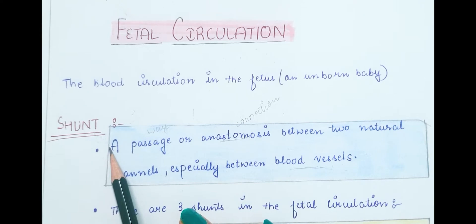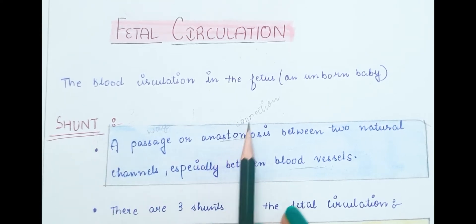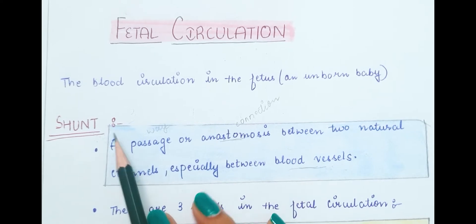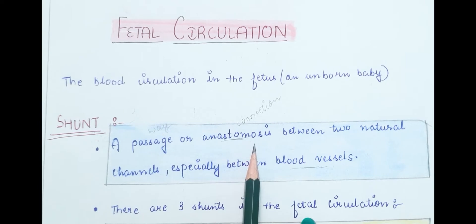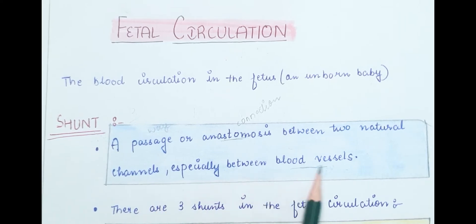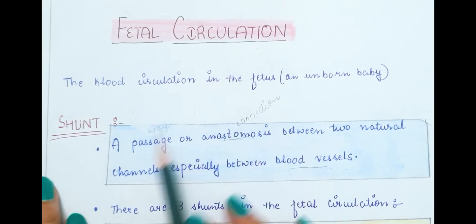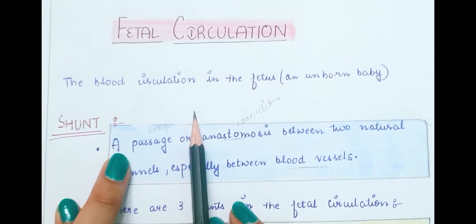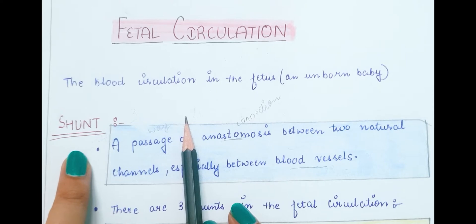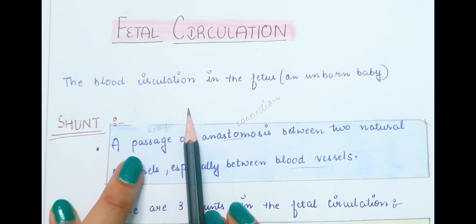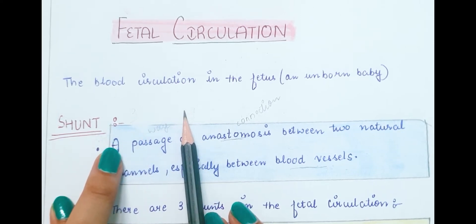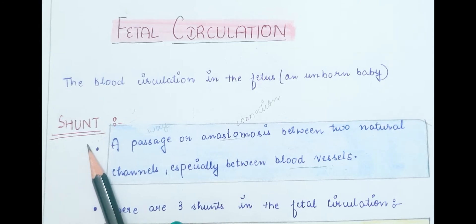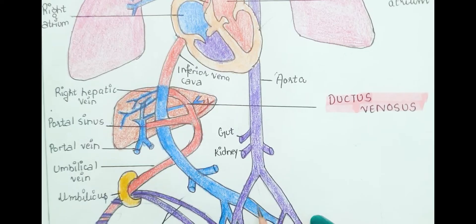In fetal circulation, shunts are present. A shunt is a connection or anastomosis between blood vessels — a passage or connection between two natural channels, especially between blood vessels. Shunts are required because they help blood bypass or skip the liver and lungs, which are not working properly before birth. There are three shunts present in fetal circulation.